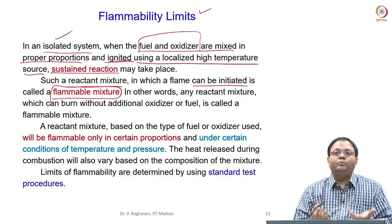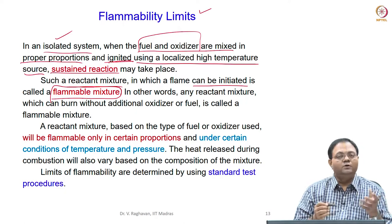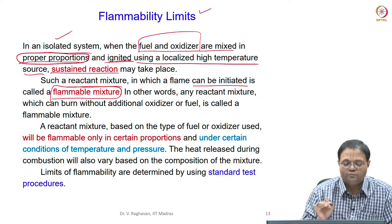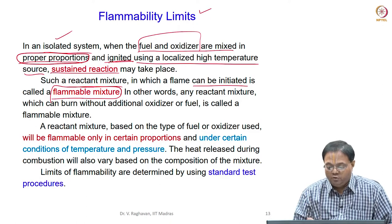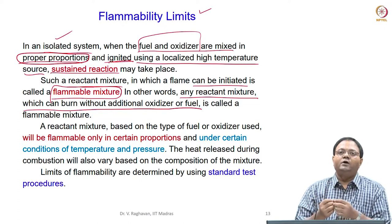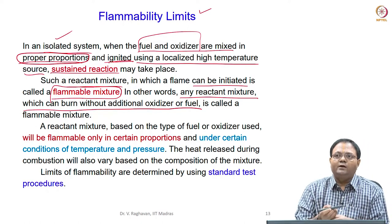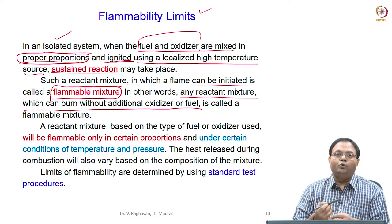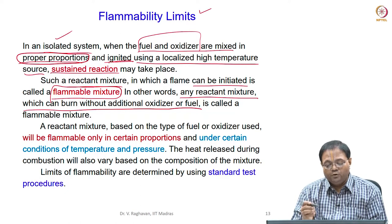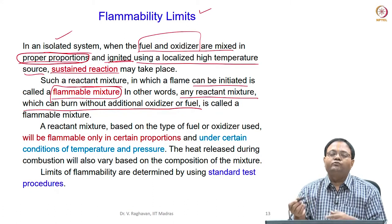If you have a mixture that is not able to be ignited — even with a spark continuously applied — it may not ignite. Only under certain proportions will it ignite. For a lean mixture with more oxidizer, try adding more oxygen and it may not ignite after a particular point; it may need more fuel. Similarly, if the mixture is rich, adding more fuel may not allow burning because it may need more oxygen.